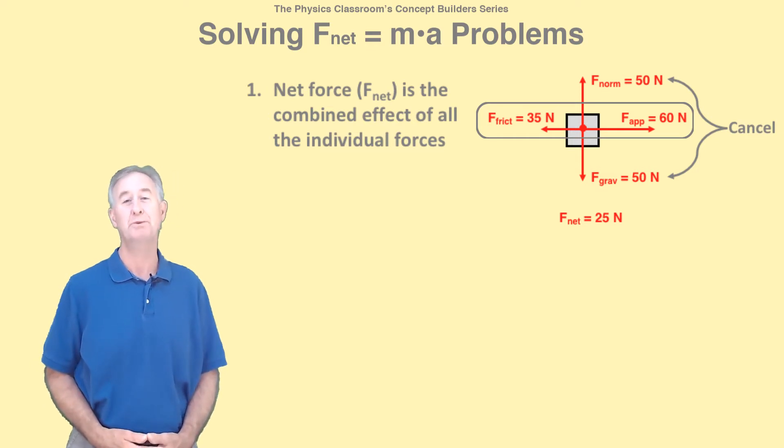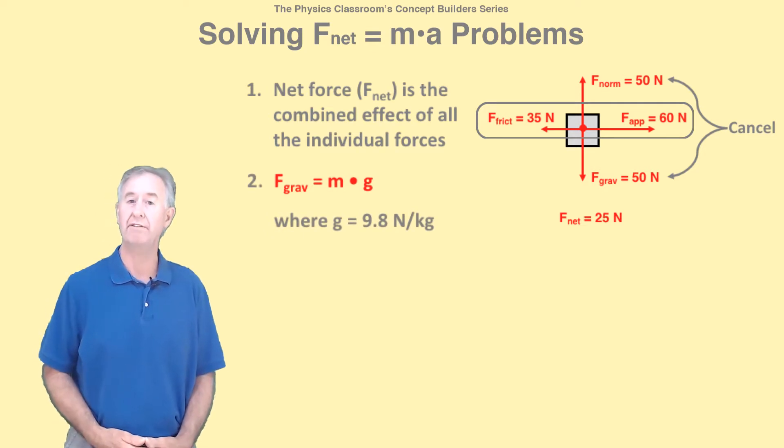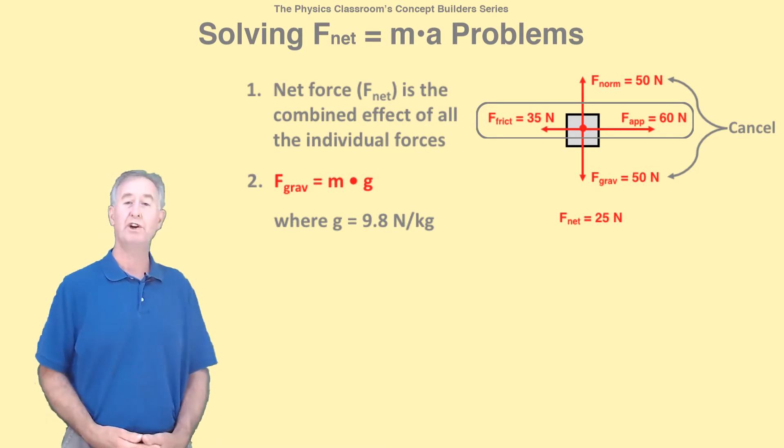Second, the down force is gravity, and is related to the mass by the equation f grav equal m times g, where g is 9.8 newtons per kilogram.